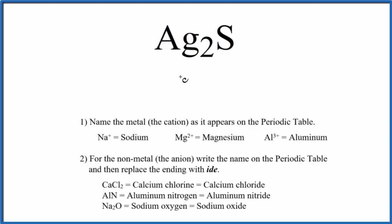First off, we have silver. So we're going to write the name of the metal as it appears on the periodic table. So Ag, that's silver.